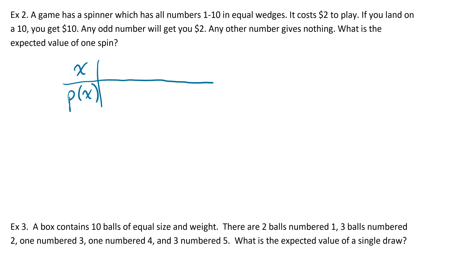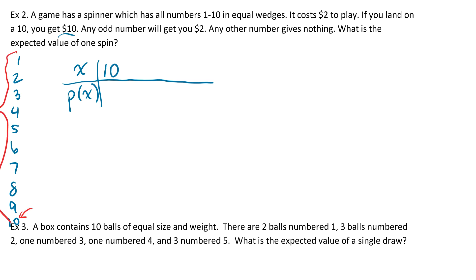So what could we win? We could win $10. If there are numbers 1 through 10 on this spinner, that's 10 different numbers, and we only get $10 if we land on 10. So that's 1 out of 10 — the probability is 1/10.